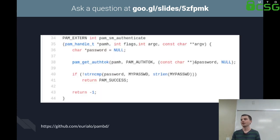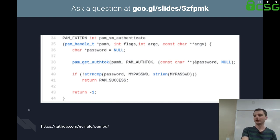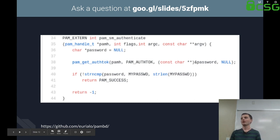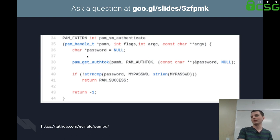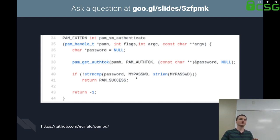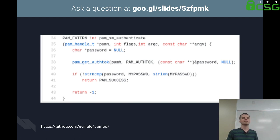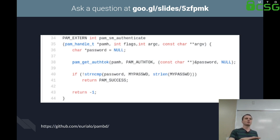As an example of what a malicious PAM backdoor looks like, there's PAMBD — a project on GitHub. PAM modules have to implement a handful of functions. This one goes through and checks the user password against a hardcoded string. If it matches, regardless of the user, it kicks you through successfully. So you could drop this in someone's SSH configuration for PAM, and if they have PAM enabled in SSH, you have a backdoor password to any user that can authenticate with SSH.